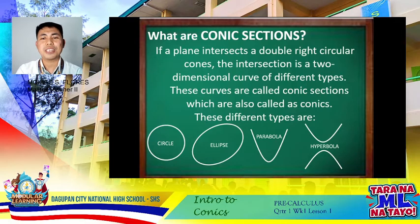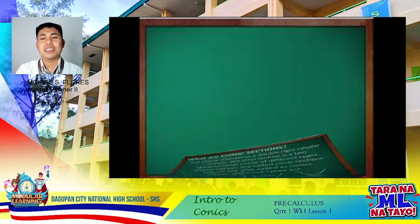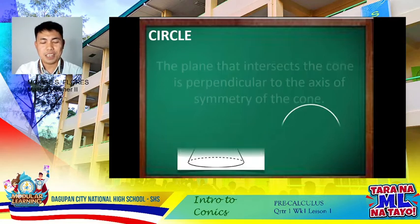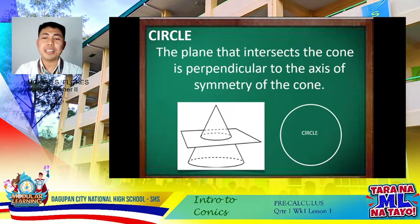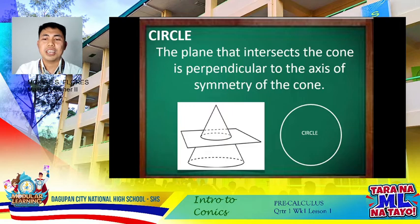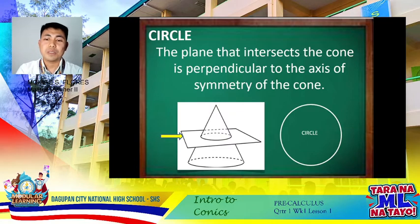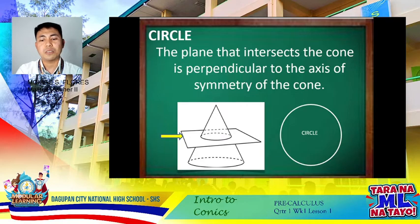Let's start with the first conic section: circle. How does a circle form? A circle is formed when the plane that intersects the cone is perpendicular to the axis of symmetry of the cone. When the plane is horizontal, it forms a circle.